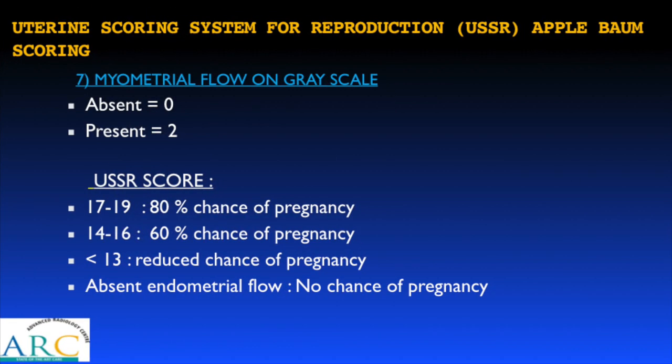When myometrial flow is seen on grayscale, that scores two. A total score of 20 is associated with a 100% chance of pregnancy as described by Applebaum. A score of 70–90% of maximum is associated with an 80% chance of pregnancy, and as scores decrease, the chance of pregnancy falls, with absent endometrial flow carrying a zero chance of pregnancy.